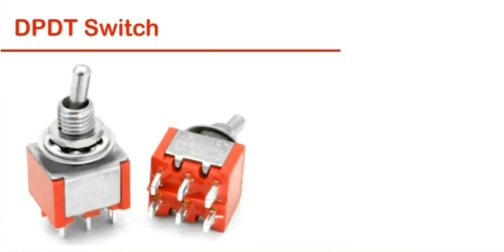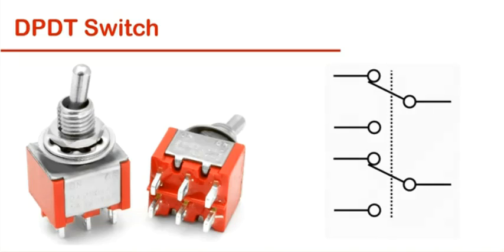Like SPDT switch, there is another type of switch called double pole double throw or DPDT switch. This is the symbol of a DPDT switch. These switches have six pins.